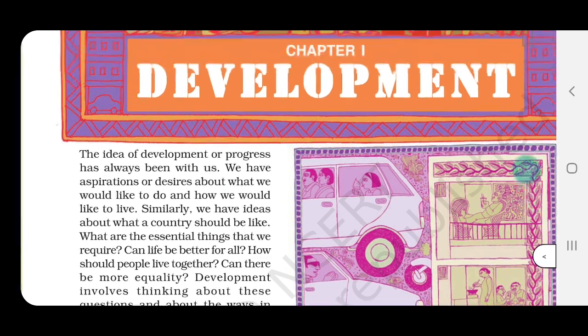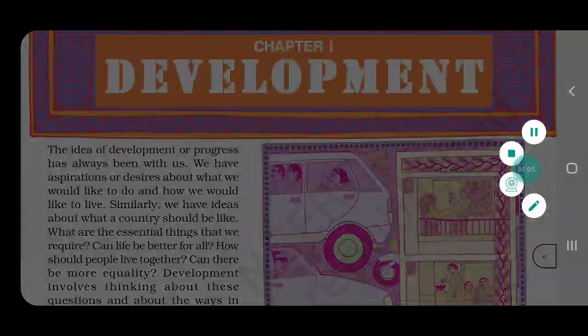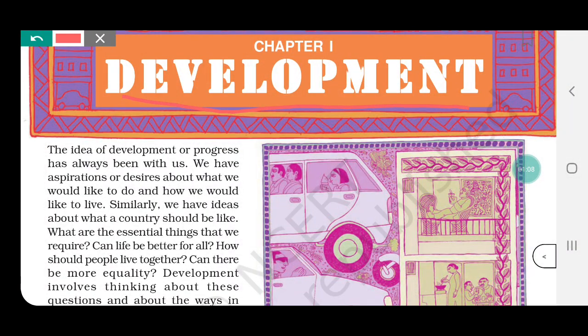Now our first chapter is Development. In this chapter, what are we going to study? We are going to study about the meaning of development — what does development mean? Then after that, we will study how we can measure individual development, how we can measure a country's development, and how we can compare different countries.